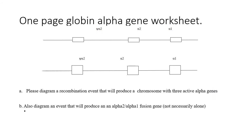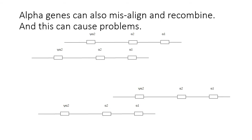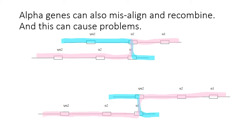Now for the alpha globin worksheet: you're asked to diagram a recombination event that will make a chromosome with three active alpha genes, and also one that makes an alpha 2-alpha 1 fusion. The chromosomes are shown misaligned. In one example, the blue chromosome starts with pseudo alpha 2, goes to alpha 2, and then crosses over with alpha 1. The reciprocal event has pseudo alpha 2 and alpha 2, then an alpha 1-alpha 2 fusion and an alpha 1.